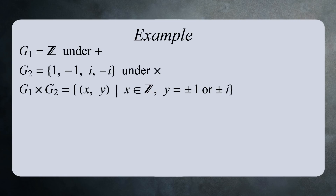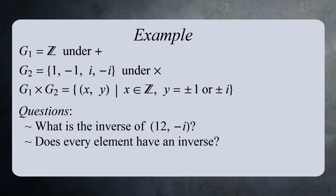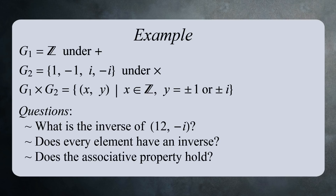It's good practice to verify that the other group requirements are met. For example, what's the inverse of (12, -i) in this group? Does every element have an inverse? And does the associative property hold?